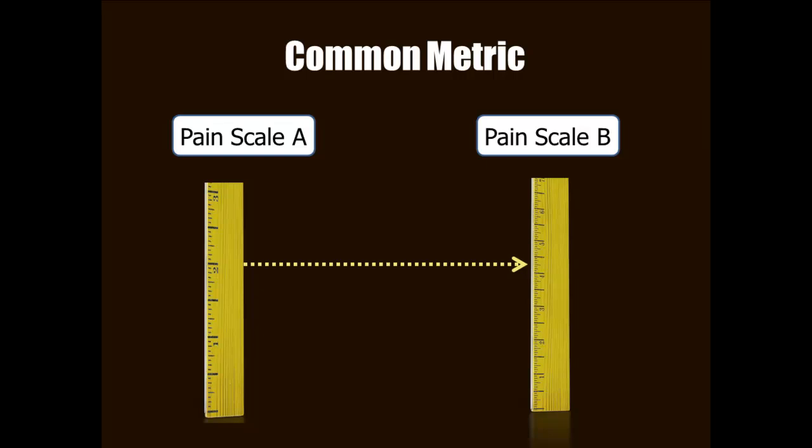Once the scale alignment is completed, then you can have a crosswalk that is basically a table that shows you what scores on one measure are associated with the scores on another measure.